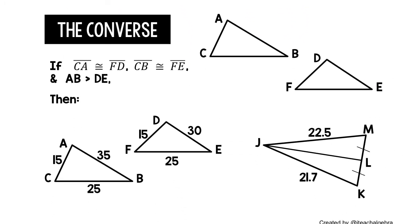Converse of the hinge theorem: if segment CA is congruent to segment FD, and segment CB is congruent to segment FE, and segment AB is greater than segment DE, then we can say the measure of angle C will be greater than the measure of angle F. Or the measure of angle F will be less than the measure of angle C.